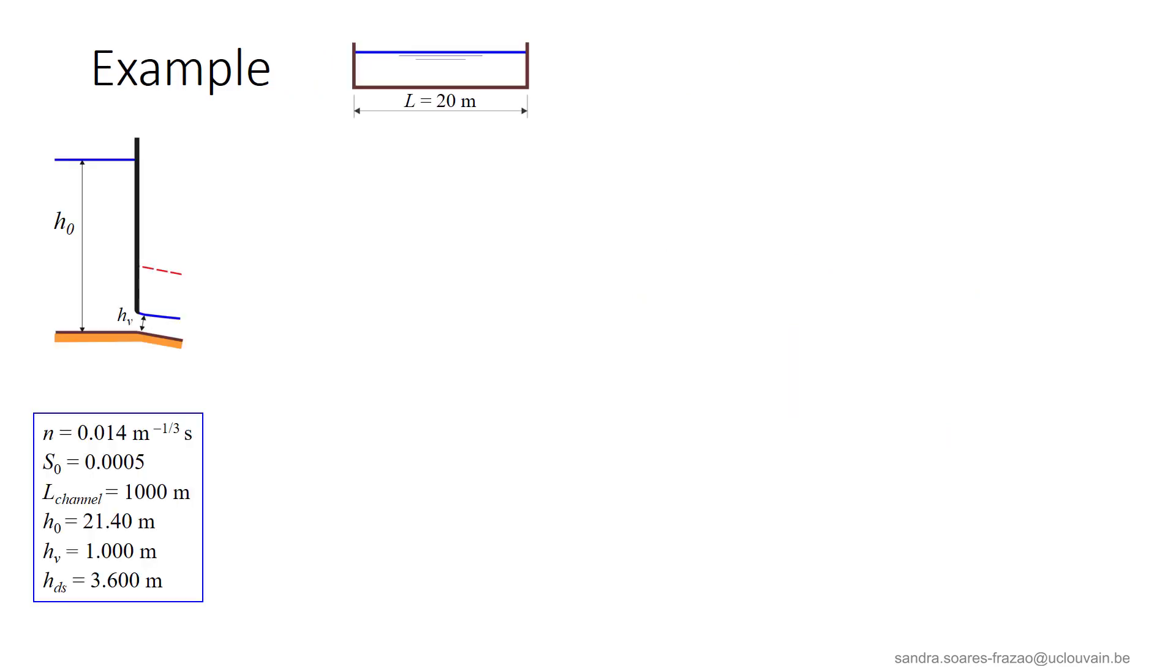Let us apply this to an example in this rectangular channel. The channel is 1000 meters long and has a bed slope of 0.5 per thousand.